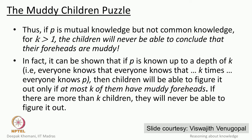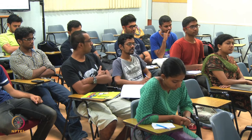It has been shown that if you have knowledge nested up to depth k — meaning I know that he knows that he knows, up to k levels — then if at most k children have muddy foreheads they will still be able to arrive at the answer. You do not really need full common knowledge in this situation; you just need sufficient knowledge up to k levels of nesting.